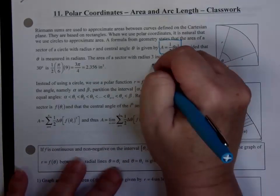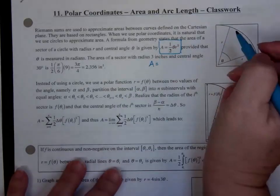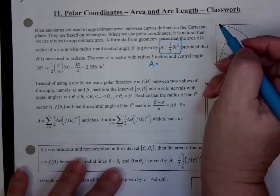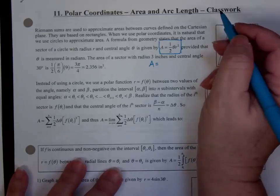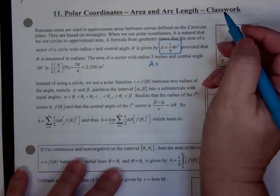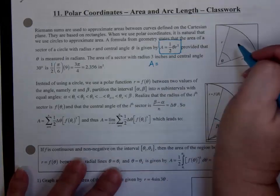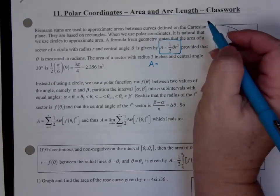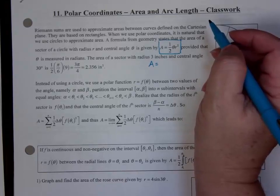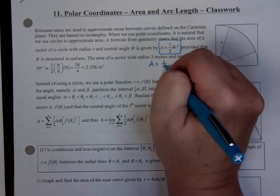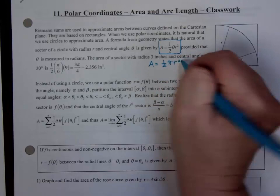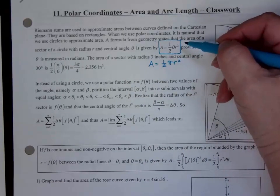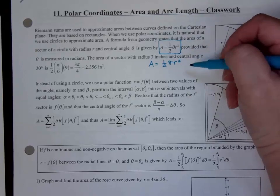If you think about it, it kind of makes sense. Consider a semicircle — the radian measure of a semicircle is pi. The area of a semicircle is one-half pi r-squared. Didn't we just say the angle theta was pi? It fits the same format.